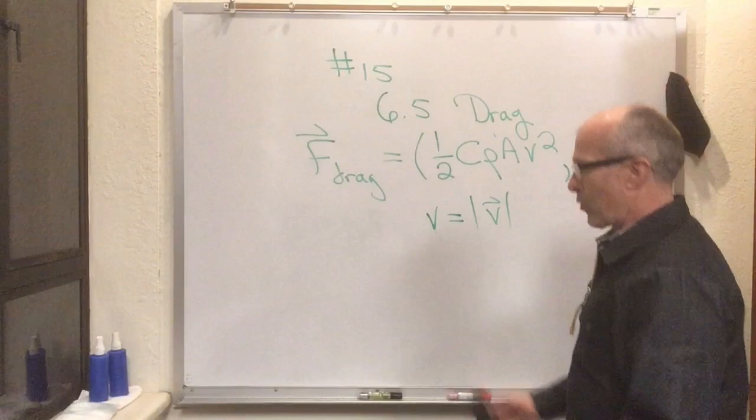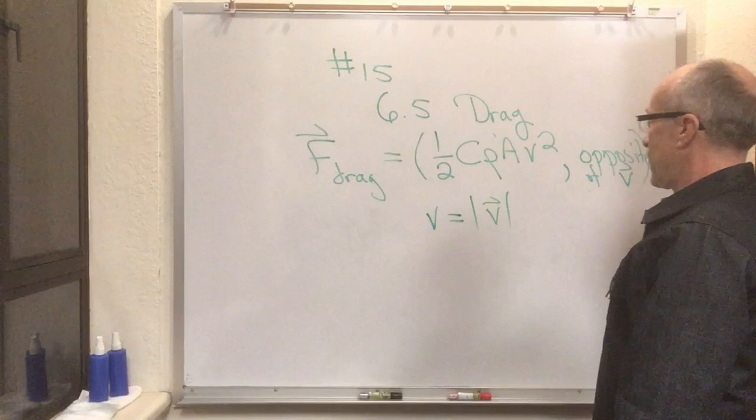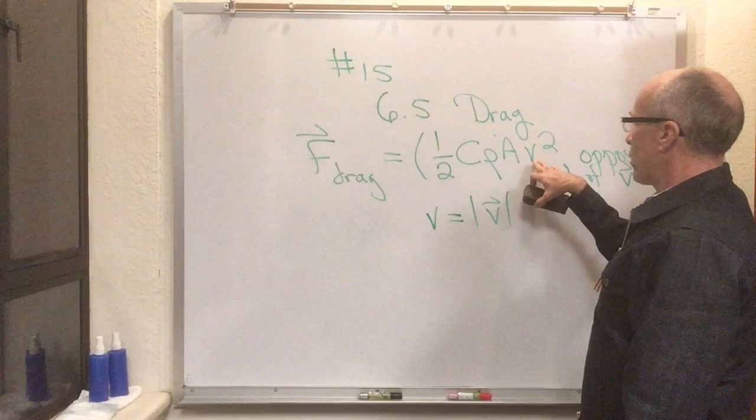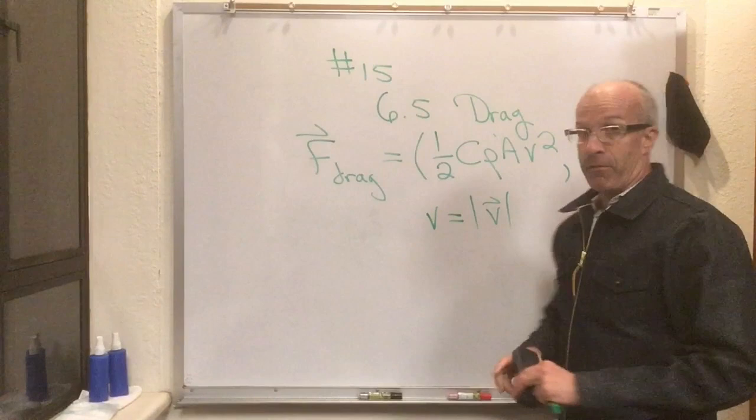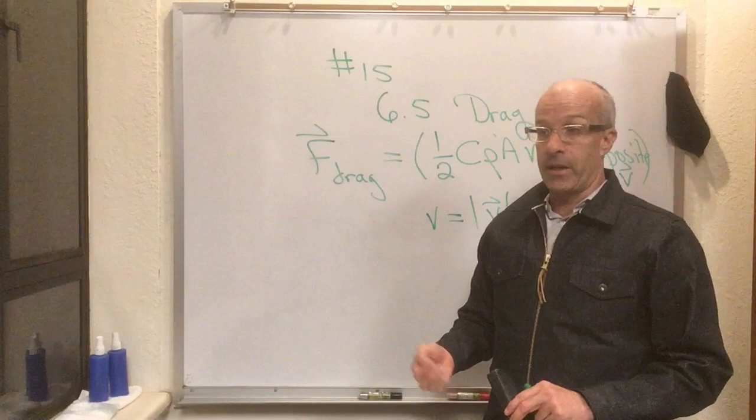Ignoring all these constants for a second, this says that the amount of drag is proportional to the velocity squared. So if one object is going five kilometers per hour and another object is going 0.5 kilometers per hour and all these constants are the same, then the one going 0.5 kilometers per hour, because its speed is one-tenth, experiences one one-hundredth of the drag.